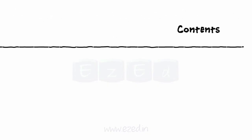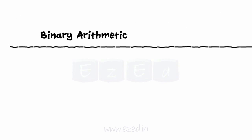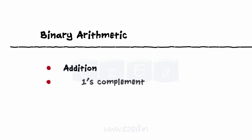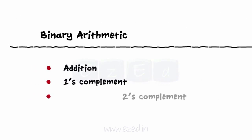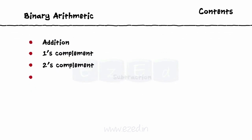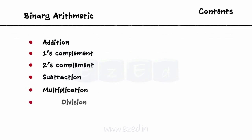In this Easy Ed video lecture, we will learn binary arithmetic, which consists of addition, one's complement, two's complement, subtraction, multiplication, and division.